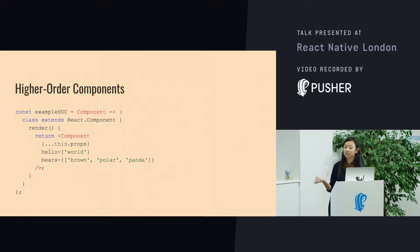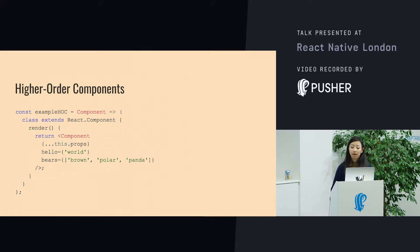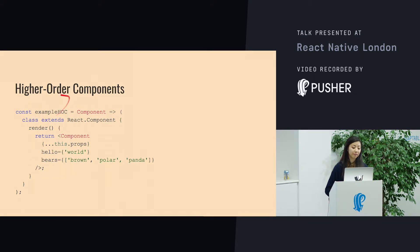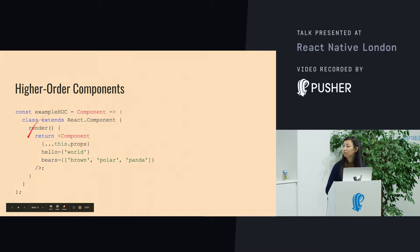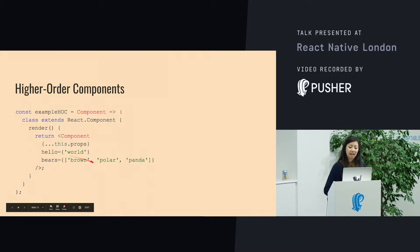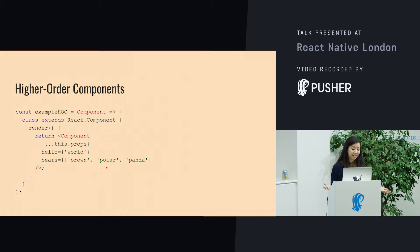This is an example of a really basic higher-order component. You can see it's a function — it takes in a component, wraps it in a new component, and then renders the original component. It adds some stuff, like a list of bears, because the component needs a list of bears.